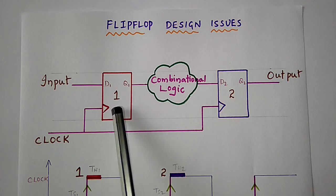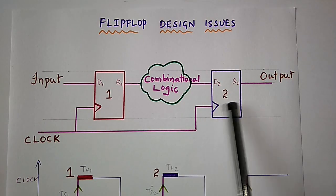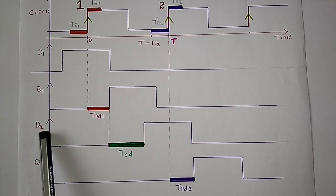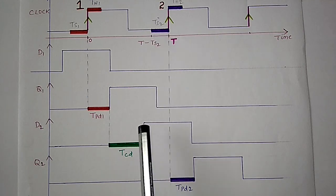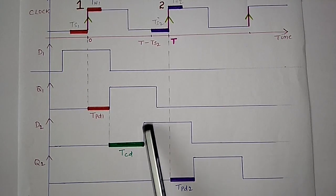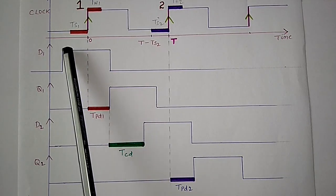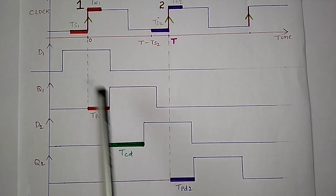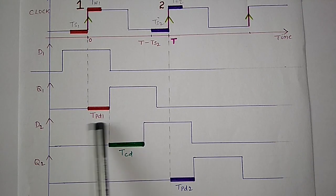To fix setup time violations for flip-flop two, the input to flip-flop two that is D2 signal should remain constant during TS2. Or in other words, any change or transition in D2 should happen before TS2. The change in D2 happens only when there is a change in input signal D1 and the time taken for this change in input D1 to reach D2 is equal to the sum of TPD1 and TCD.